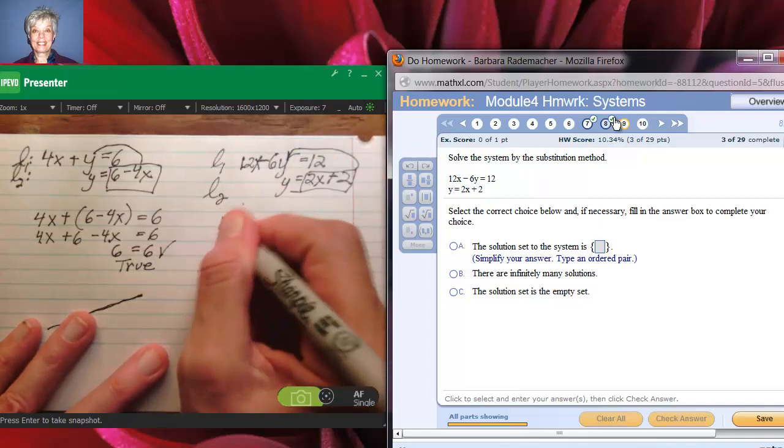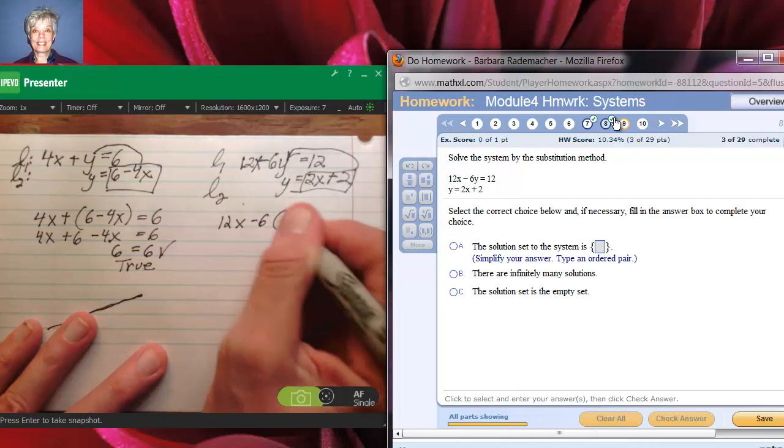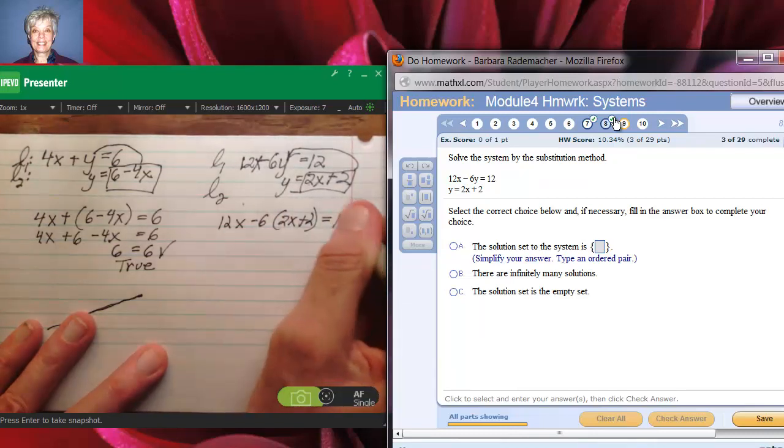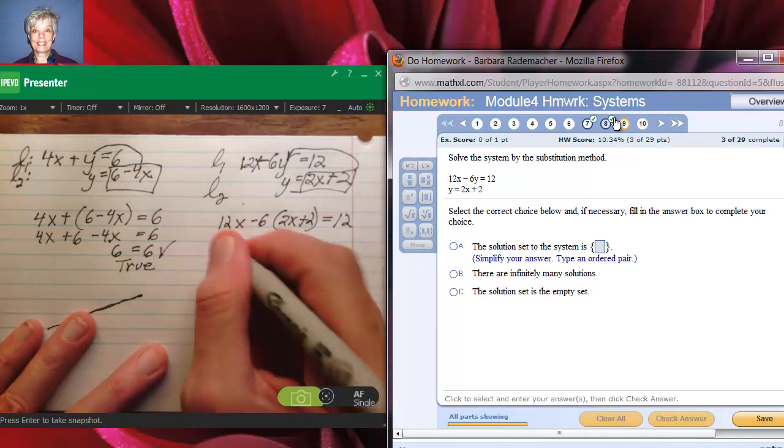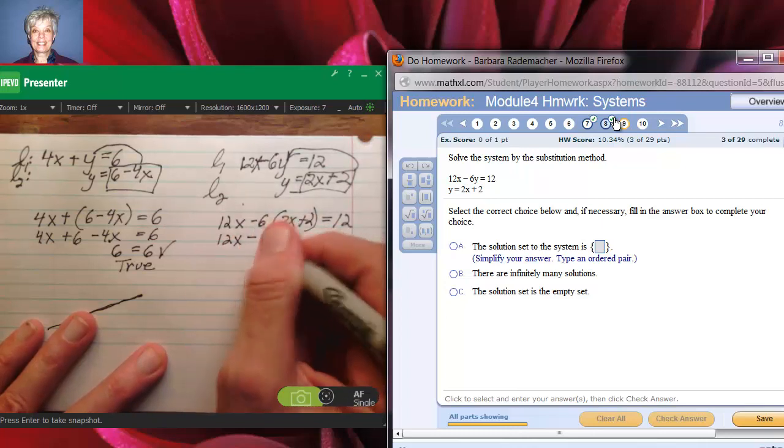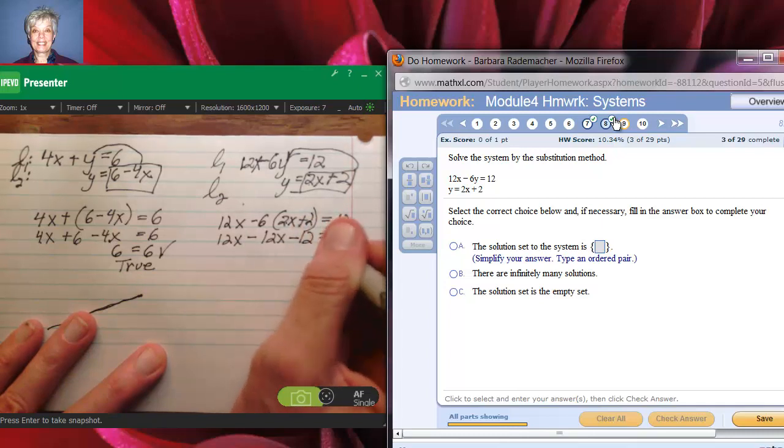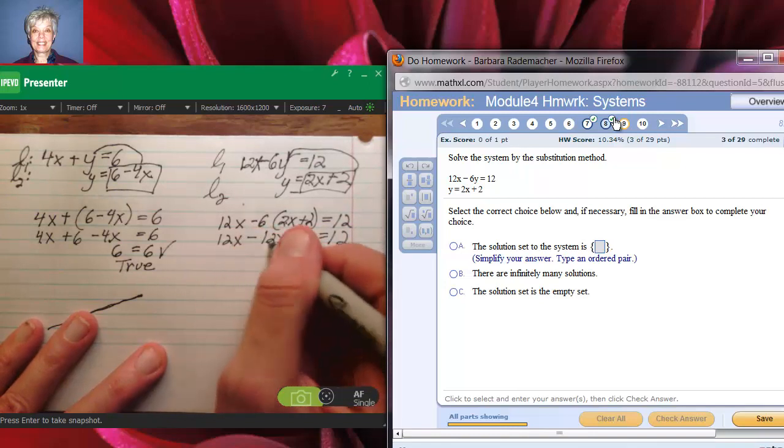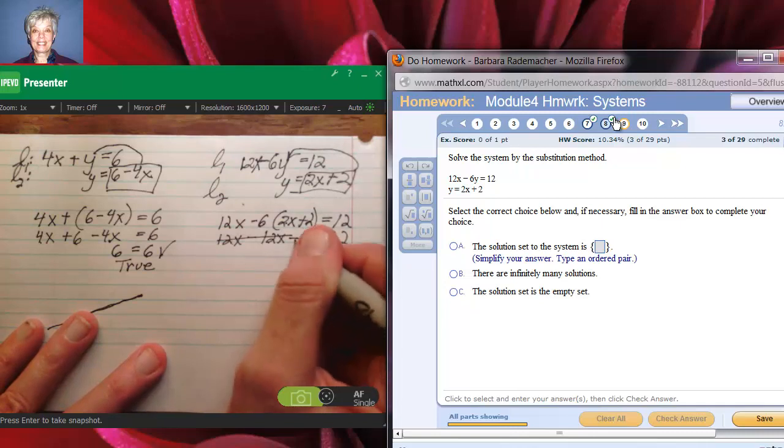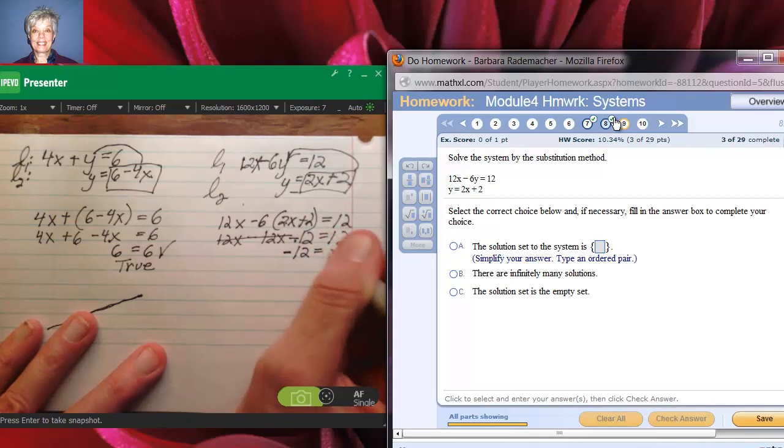We'll get 12x minus 6 times 2x plus 2 equals 12. So I'll have 12x minus 6 times 2 is 12, so 12x minus 6 times 2 is minus 12 equals 12. Oh darn, look, 12x minus 12x, you know that's zero. You're going to be left with a negative 12.